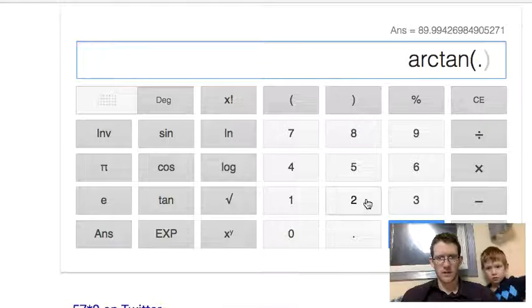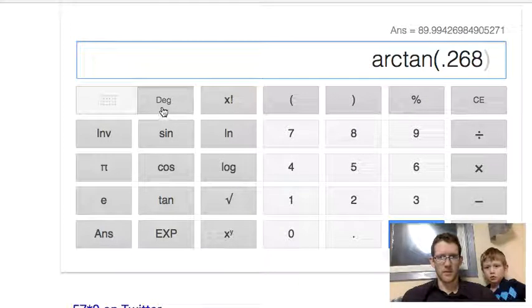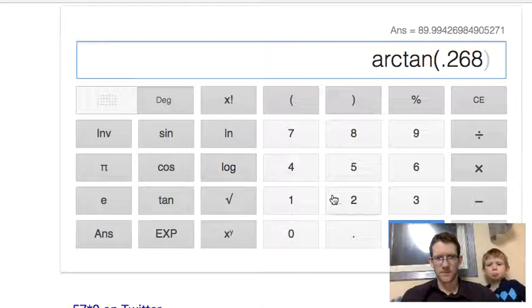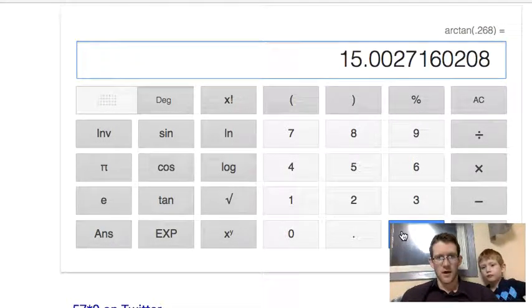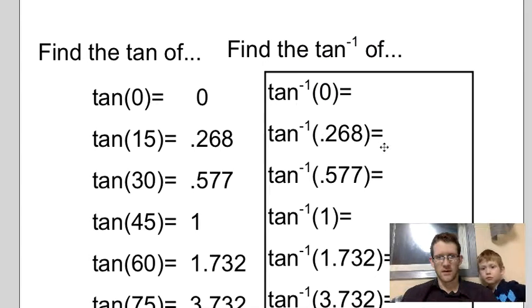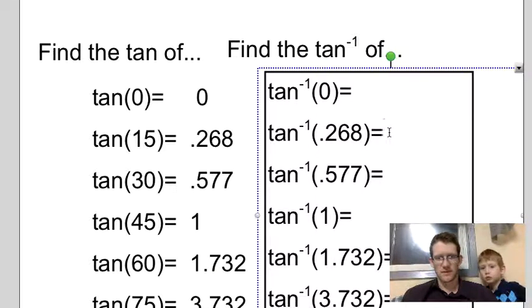0.268. Note here that I don't want to be in radians. I want to be in degrees. And this value is? Surprise, surprise, 15. Whoa! Okay, 15.